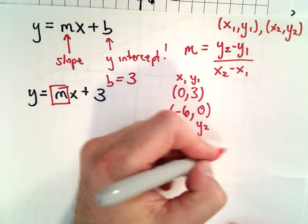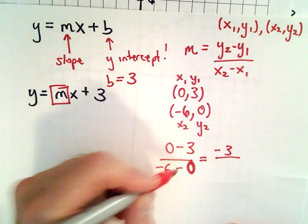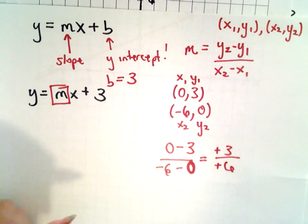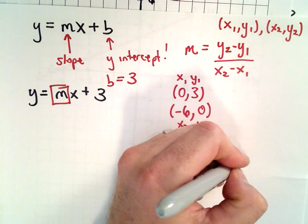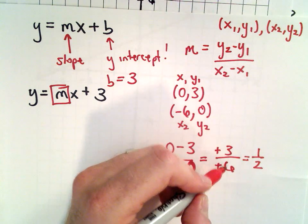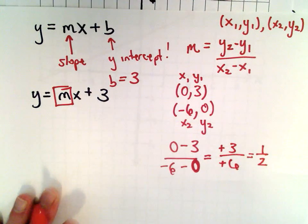0 minus 3 is going to be negative 3. Negative 6 minus 0 is negative 6. A negative divided by a negative is a positive. 3 divided by 6, well that reduces to 1 over 2. 3 divided by 3 is 1, 6 divided by 3 is 2, so that's how I'm simplifying that.